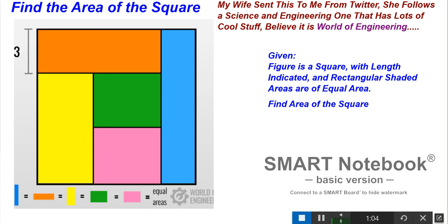This isn't really a geometry problem, it's more of an Algebra 1 problem. The geometry is simple—we're given a square, and students learn how to find the area of a square early on. It's just side times side. What's tricky here is that we're given the length of 3, and all these rectangular shaded areas are of equal area. So we have to figure out some strategies on how to do this.